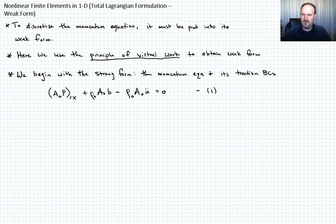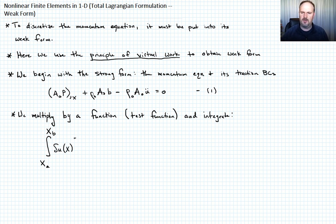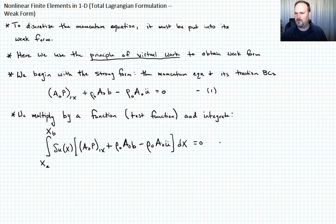To get the weak form using the Galerkin method, you multiply by a weight function and integrate. We'll do the same — multiply by a test function we'll call δu, a function of X, and integrate. So Equation 2 is: integral from X_a to X_b of δu times [A₀P,x + ρ₀A₀b − ρ₀A₀ü] dx = 0.